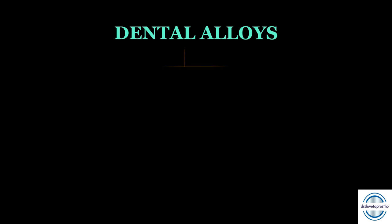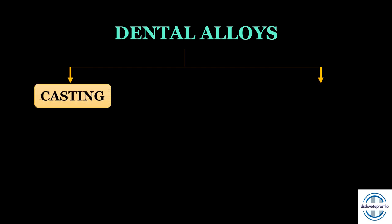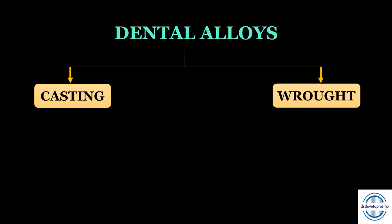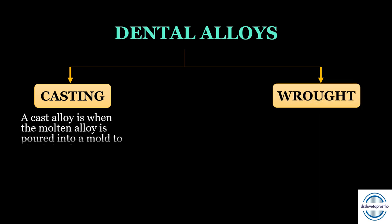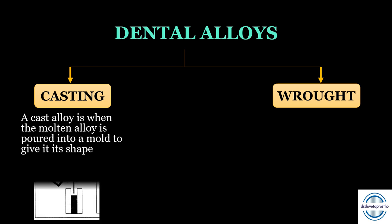Alloys in dentistry are used for fabrication of restorations, files, instruments and more. These dental alloys can be of two types: first are the casting alloys and second are the wrought alloys. The cast alloy is when molten alloy is poured into a mold and given a shape. These alloys are mainly used to fabricate crowns, bridges, inlays, and onlays.